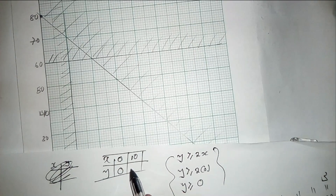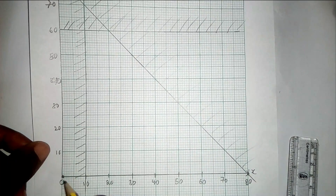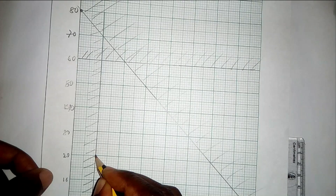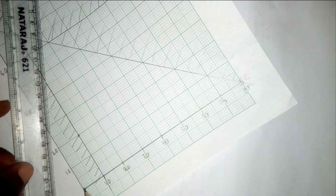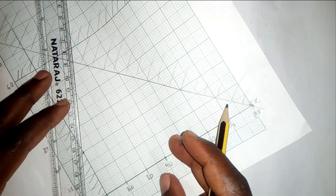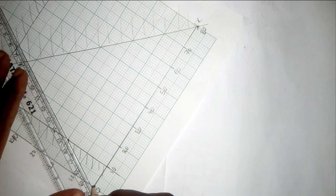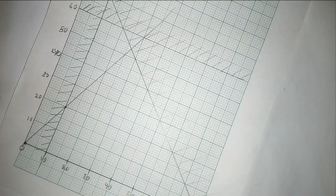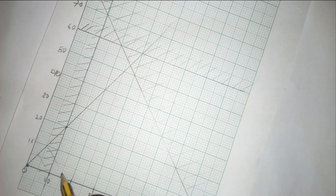So my two coordinates are (0, 0) and (10, 20). On the Cartesian plane, (0, 0) is at the origin, and (10, 20) is found by going to 10 on the x-axis and 20 on the y-axis. Join these two points to form a line. Since the inequality says y is greater, greater is above the line, so we shade the opposite side, which is below the line.